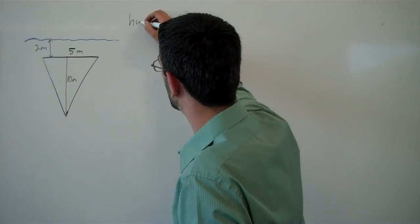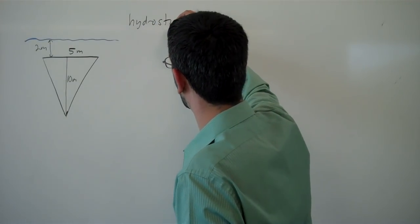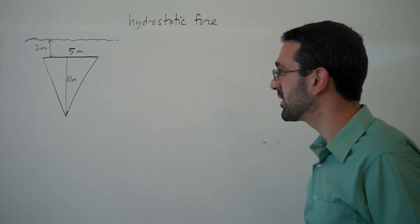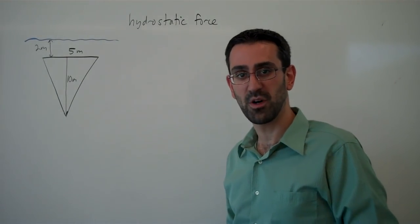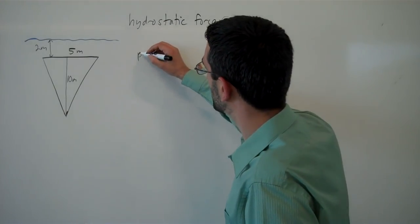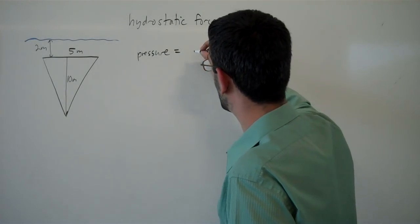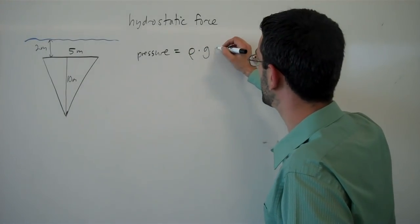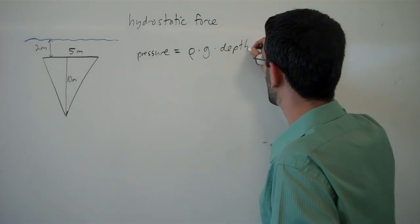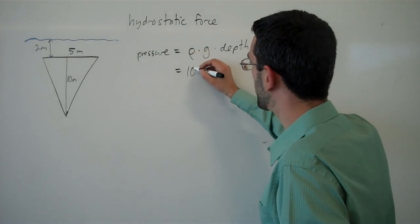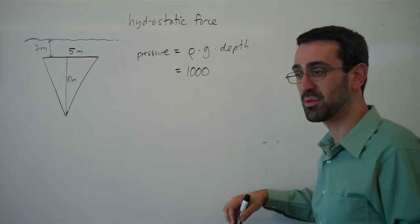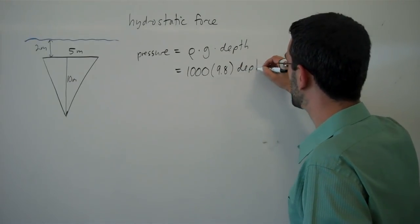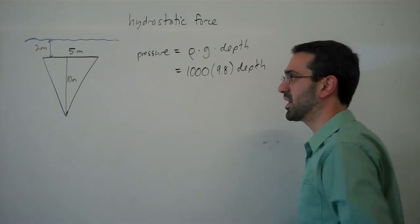We want to find hydrostatic force, which is the force due to water pressure. Pressure of water depends upon the depth. The pressure is going to be the density of the medium, so density of water, times gravity times depth. The density of water, working in meters, is 1,000 kilograms per cubic meter. Gravity, we're going to use 9.8, so that's our pressure equation.